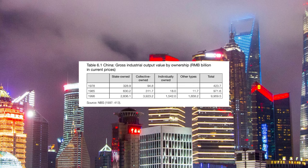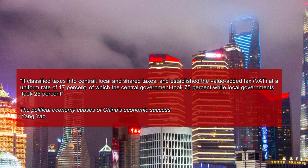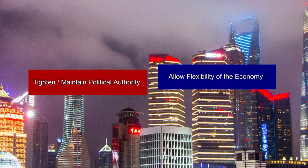To still maintain political control, the party borrowed elements of the federal system in the United States, classifying taxes into central, local, and government-shared taxes, and establishing the value-added tax at a uniform 17%, of which the central government took 75% while local governments took 25%. This helped achieve fiscal decentralization but also bolstered the authority of the central government, which translates to the authority of the party. Overall, the party has achieved the goal of tightening political authority while allowing flexibility of the economy.